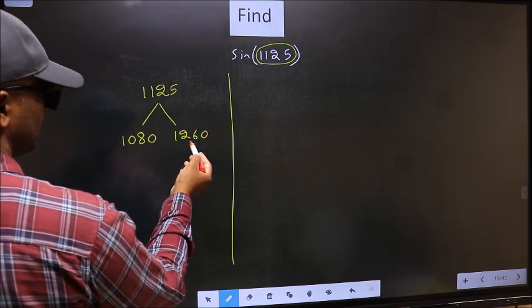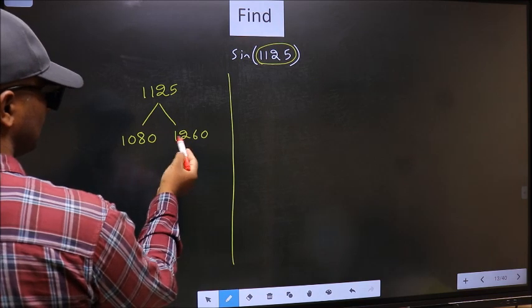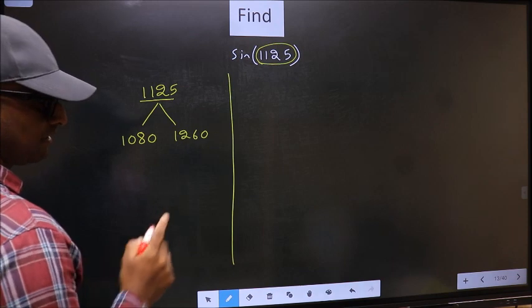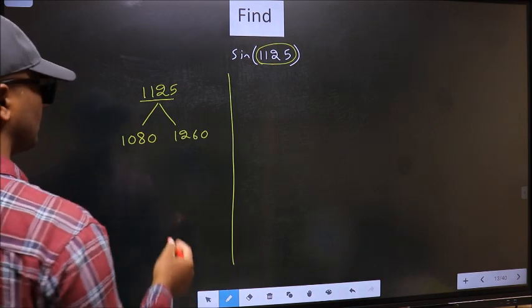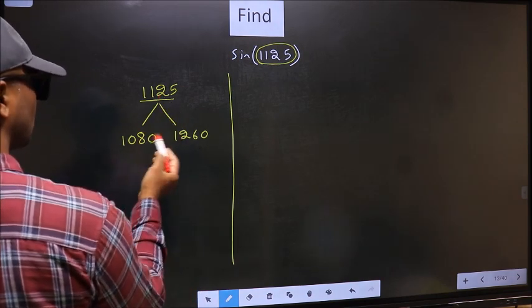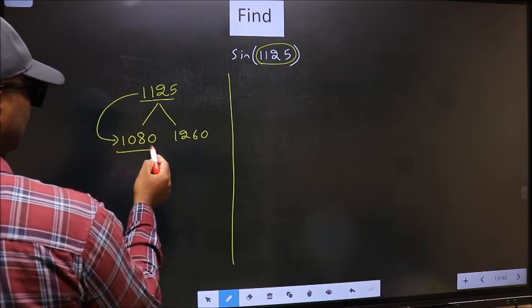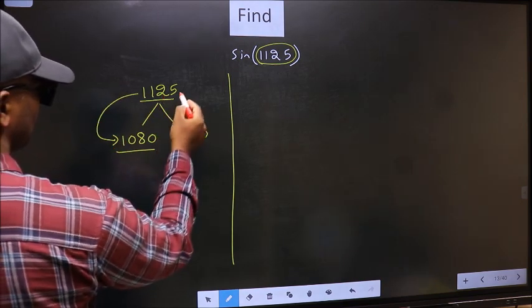In between these two numbers, 1125 lies. Next, 1125 is close to which number? This is close to 1080, so 1125 should be written as 1080 + 45.